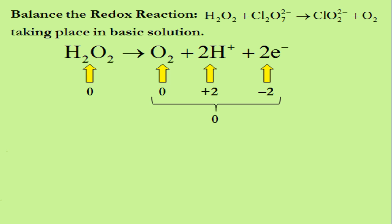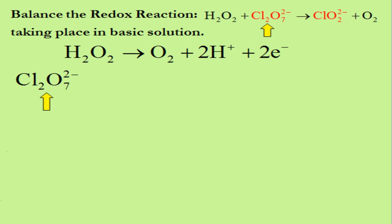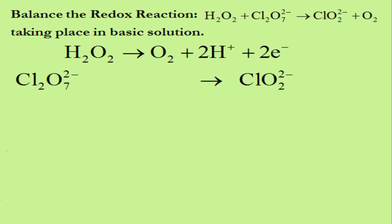We can now start writing the second half-reaction. We start by writing Cl₂O₇²⁻ on the left side, which forms the product ClO₂²⁻. We now balance the skeleton half-reaction. We start with the atom other than oxygen or hydrogen, which in this case is chlorine. There are two chlorine atoms on the left and only one on the right, so we write the coefficient 2 in front of the ClO₂²⁻ on the right side. Each side now has two chlorine atoms.